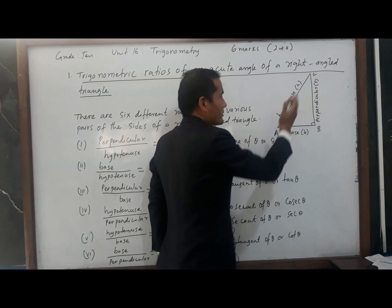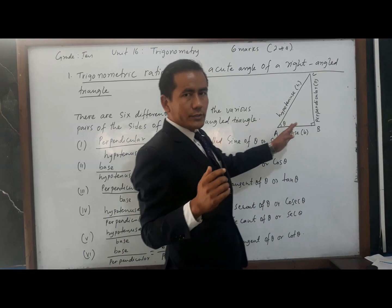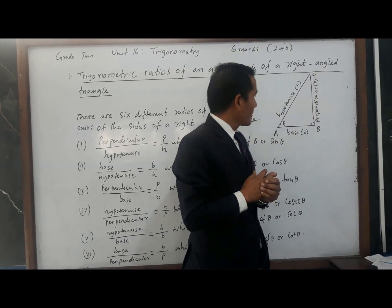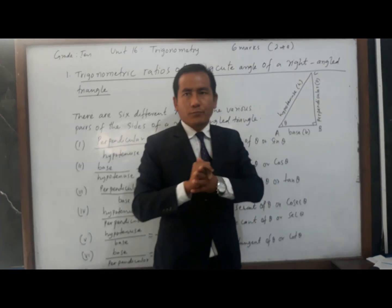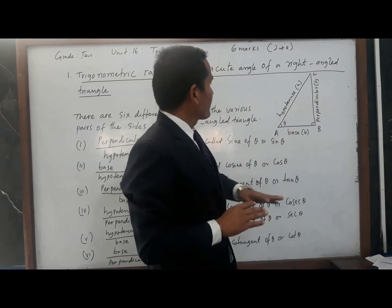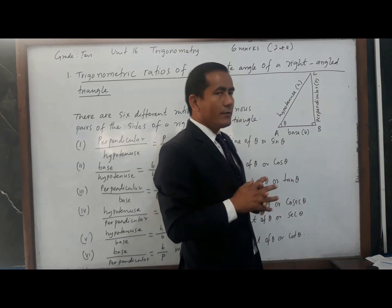If I take reference angle theta, this AB side is called the base side. The opposite side of the 90 degree angle, AC, is called the hypotenuse. The opposite side of the angle of reference, that is theta, is considered as the perpendicular. That means in a right angle triangle we have three sides: base, hypotenuse, and perpendicular.